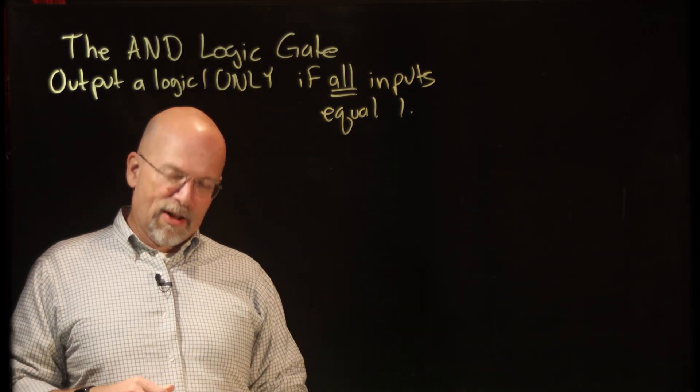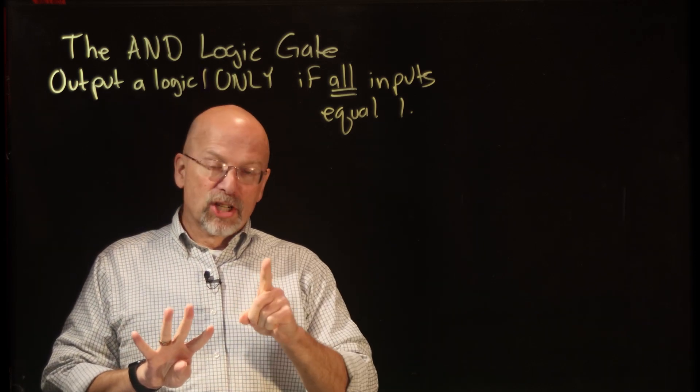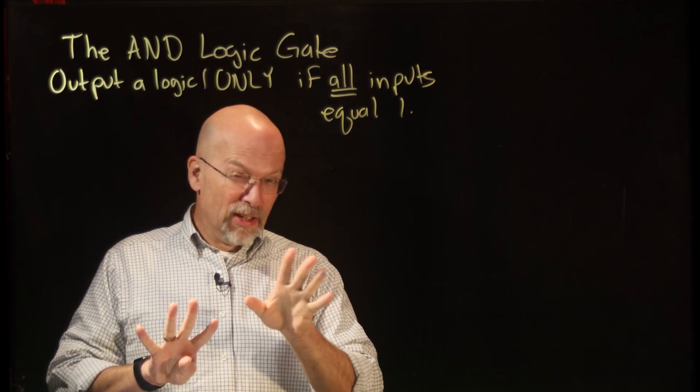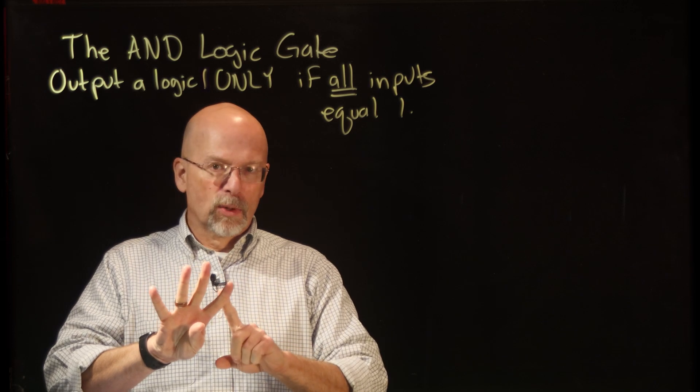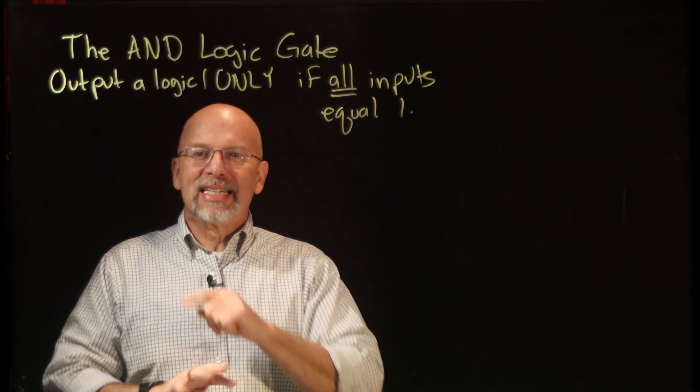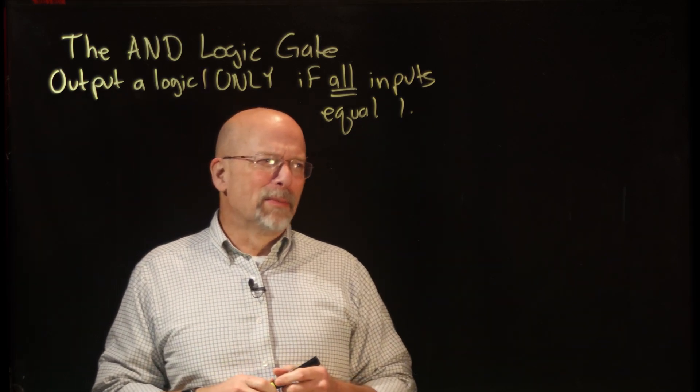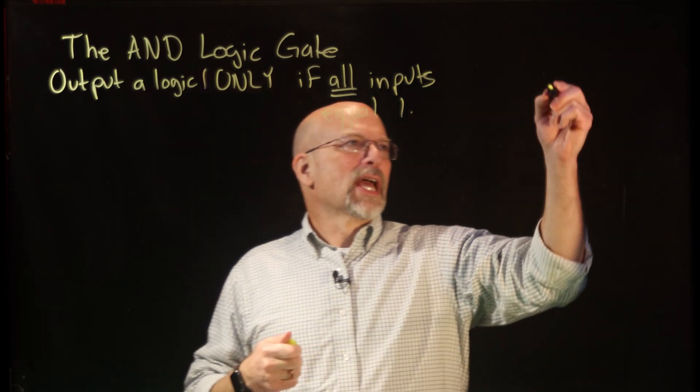So if I've got four inputs A, B, C, D, output a logic 1 only if and only if A is equal to a 1 and B is equal to a 1 and C is equal to a 1 and D is equal to a 1. So what does our truth table look like? Well, the truth table...